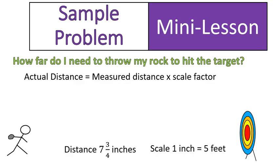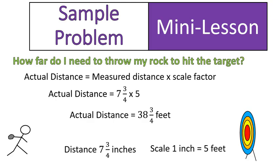So the actual distance from me to that target is the measured distance times the scale factor. So that measured distance would be that 7 and 3 quarters inches times my scale factor of 5, and that tells me that the actual distance that I would need to throw the rock to hit the target is 38 and 3 quarters feet.